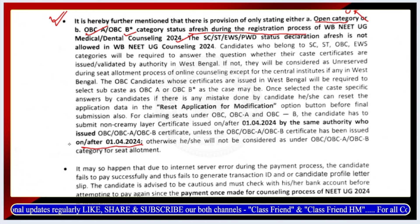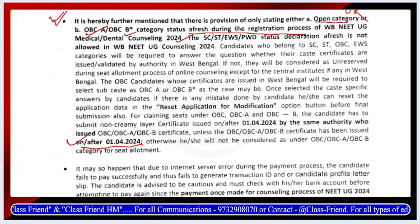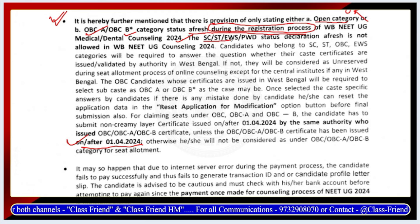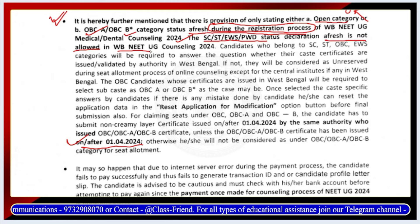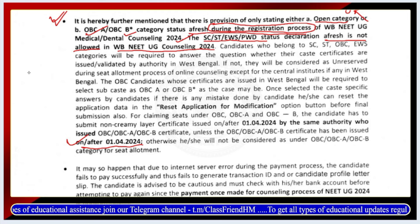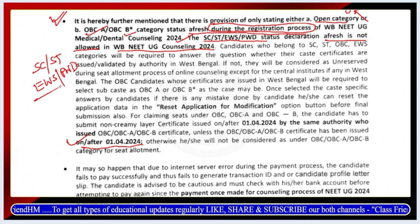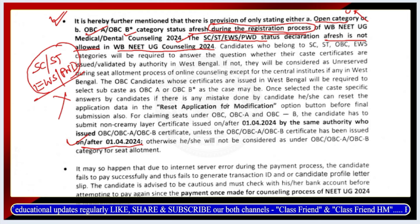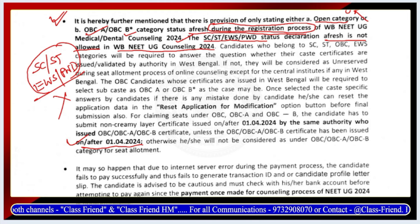If you want to see the SC, ST, EWS, and PWD categories — status declaration otherwise is not allowed in WB NEET counselling. That means SC, ST, EWS, and PWD — these four categories are allowed. The status for other categories is not allowed, and the relevant documents need to be discussed accordingly.